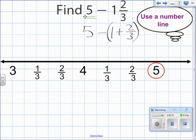So I can go ahead and start by subtracting the whole number which is the 1. So 5 minus 1 gets us to 4. Now we're left with a step of subtracting the 2 thirds.